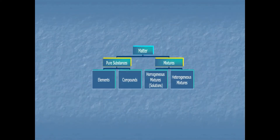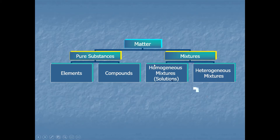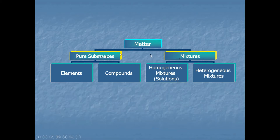Here's the summary chart again. Matter breaks into pure substances — with definite composition — and mixtures — where composition can vary. Pure substances break into elements, made of one kind of atom, and compounds, made of more than one kind of atom. Mixtures break into homogeneous and heterogeneous. A bottle of Coke stays mixed on its own — that's a homogeneous mixture.